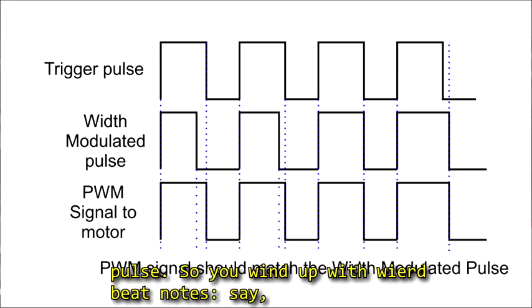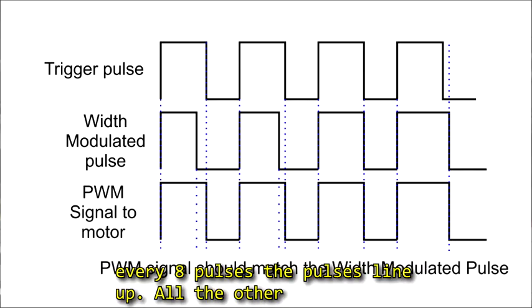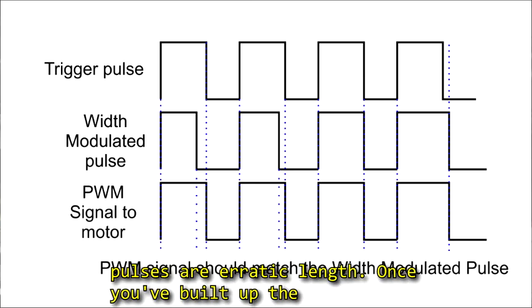So you wind up with weird beat notes, say every 8 pulses or so when the pulses line up. All the other pulses are erratic in length.